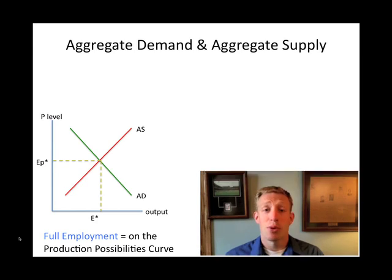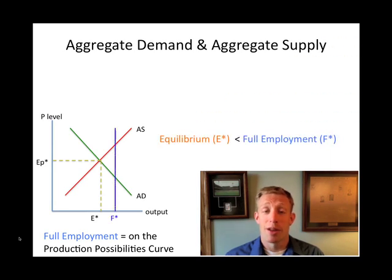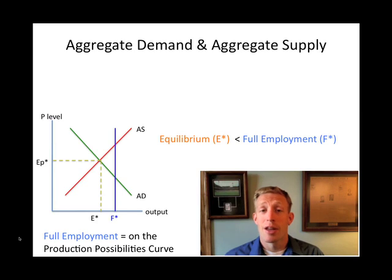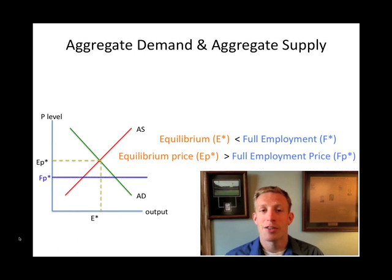If the equilibrium is below the full employment level, that can signal persistent unemployment, which is a very bad thing for the economy — especially if that persistent level is high. Similarly, if the equilibrium price is above the full employment price, then we might have persistent inflation, meaning prices keep rising, and that's a problem as well.